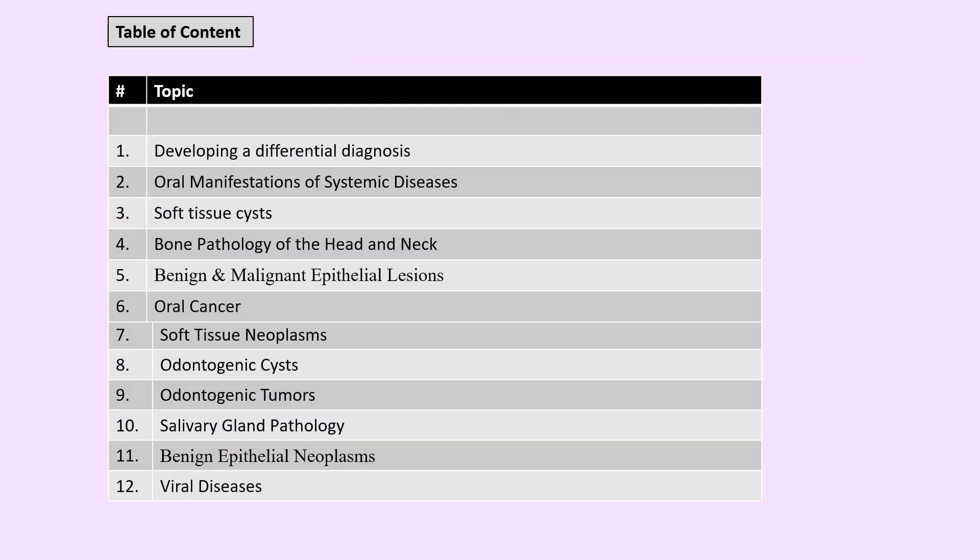In our oral pathology review, the table of contents covers: developing a differential diagnosis, oral manifestations of systemic conditions, soft tissue cysts, bone pathology of the head and neck, benign and malignant epithelial lesions, oral cancer, soft tissue neoplasms, odontogenic cysts and tumors, salivary gland pathology, benign epithelial neoplasms, and viral conditions.